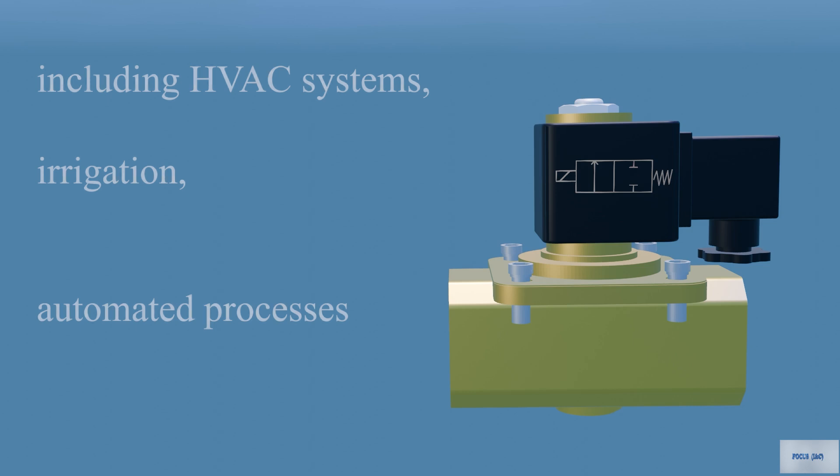Two-way solenoid valves are commonly used in various applications, including HVAC systems, irrigation, automated processes, and anywhere fluid control is necessary.